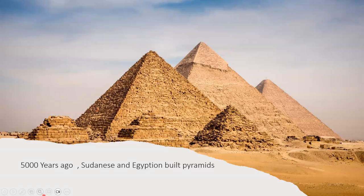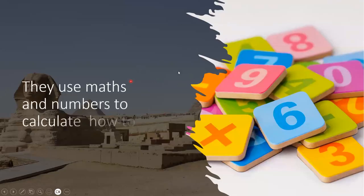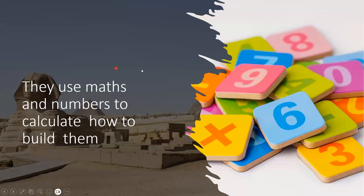5,000 years ago, Sudanese and Egyptians built pyramids. 'Built' is the past of 'build.' They used maths and numbers to calculate how to build them. Math is a subject like geography and Arabic. Numbers are 1, 2, 3, 4, 5, 6, 7, 8, 9.